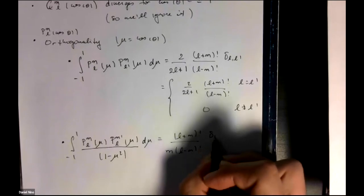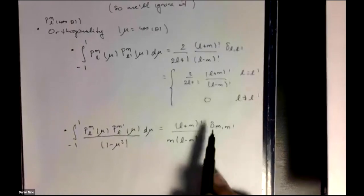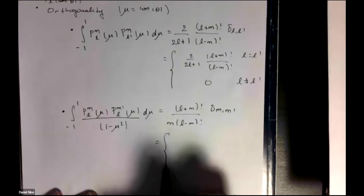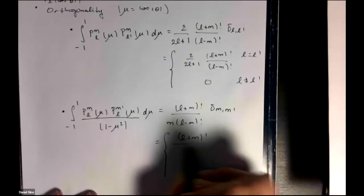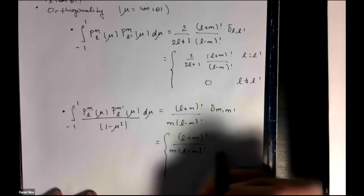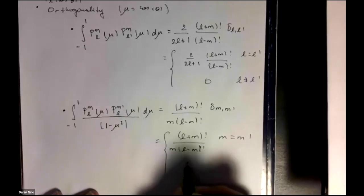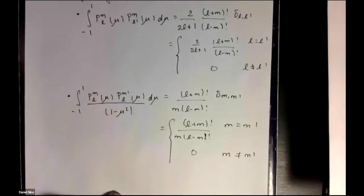it's a numerical factor and a Kronecker delta, which will again get rid of any term when m is not equal to m prime. So it's equal to that when m is equal to m prime, and is equal to zero when m is not equal to m prime.